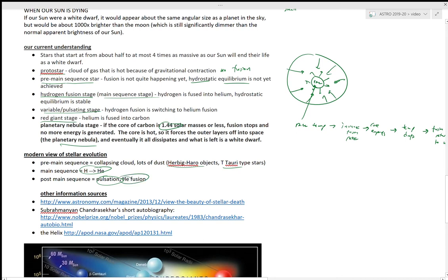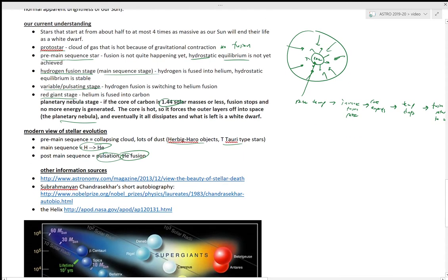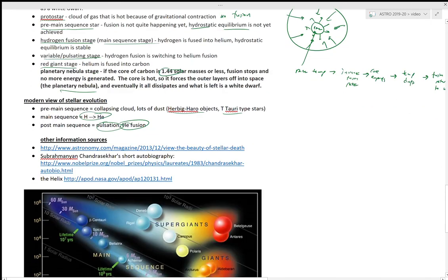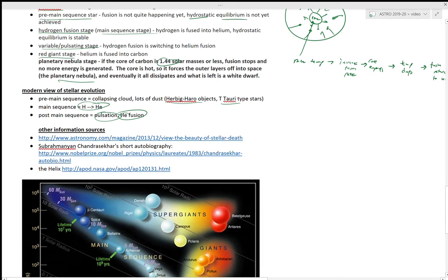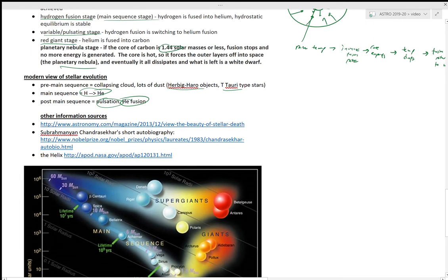And then for stars like our Sun, slightly bigger and slightly smaller, you end as a white dwarf. Next class we will cover what are the other options for stars that are significantly bigger than the Sun.